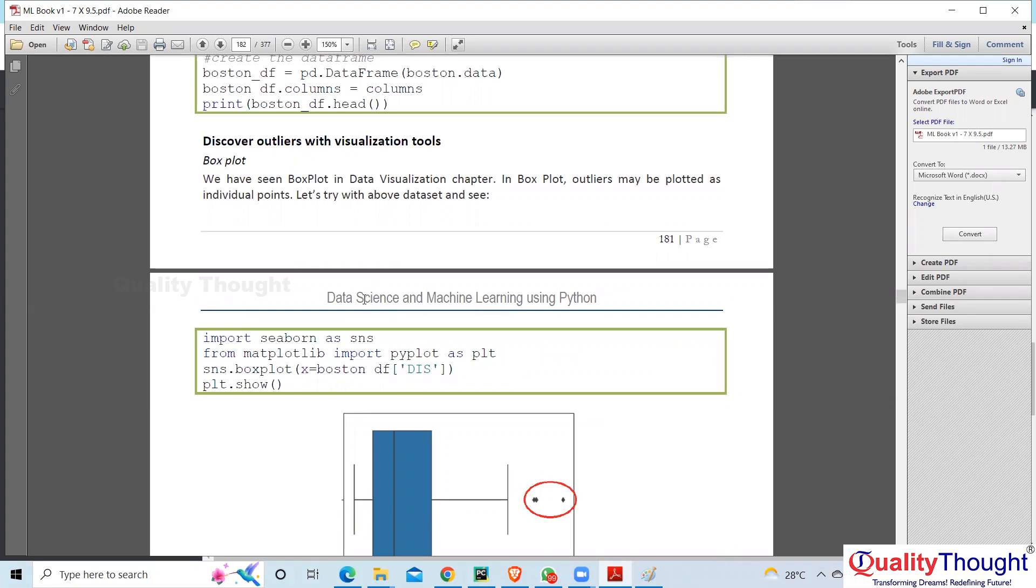Or you can convert it to Z-score and see values which are greater than four or three. You can decide, greater than three generally is treated, but say, I will treat values which are more than four as outliers.